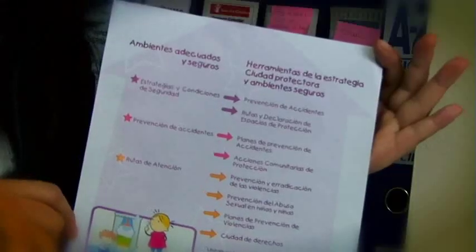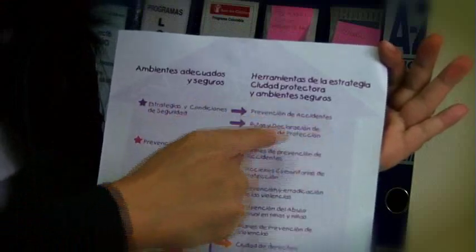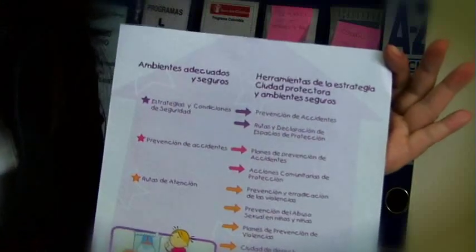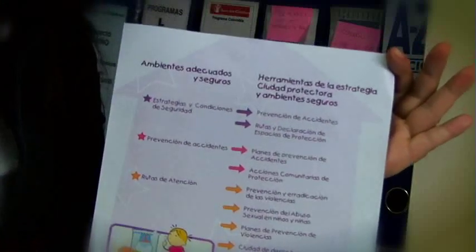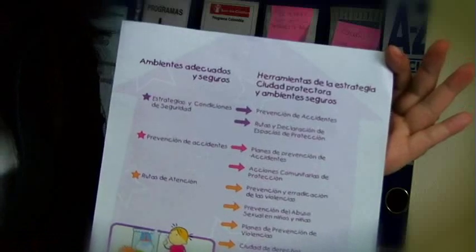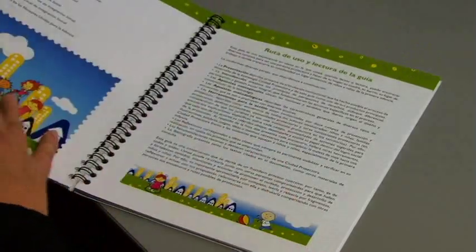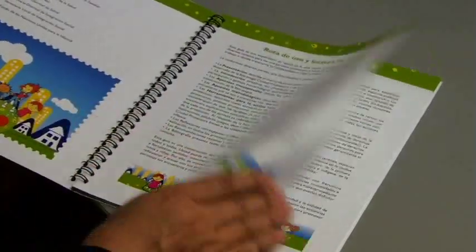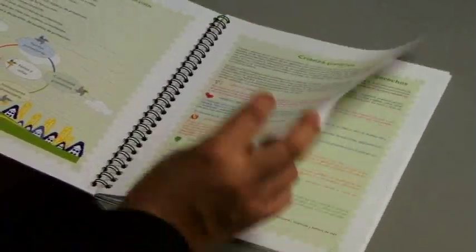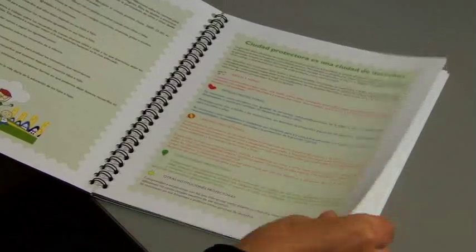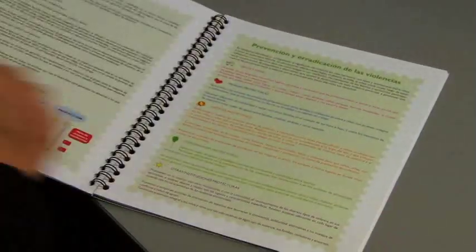Tenemos estrategias y condiciones de seguridad para la prevención de accidentes y rutas de declaración de espacios de protección, las cuales son herramientas de la estrategia Ciudad Protectora y Ambientes Seguros, especialmente para prevención de accidentes y rutas de declaración de espacios de protección, ya que estas nos van a generar estrategias y condiciones de seguridad.